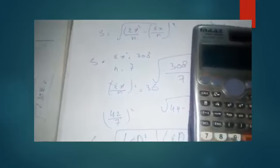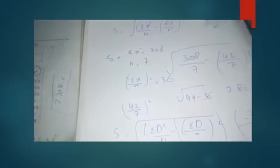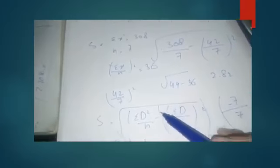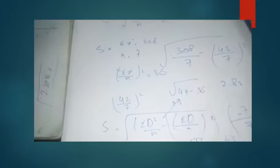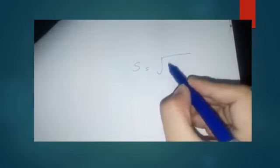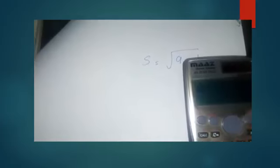Summation d squared is 63 and n is 7. So 63 divided by 7 gives 9 — the answer of this part is 9. Then: under root of 9 minus 1, which gives under root of 8, and the answer is 2.82.